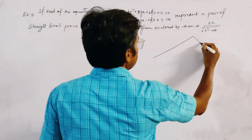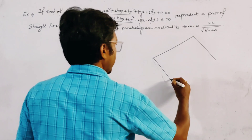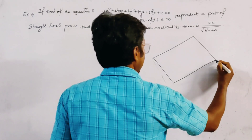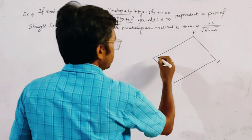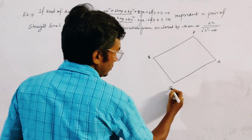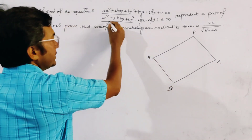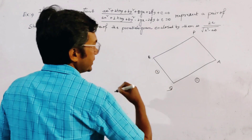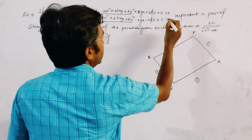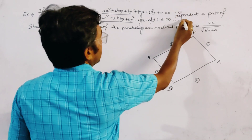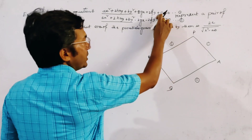Let the vertices of the parallelogram be P, A, B, and Q. Here Q, A and Q, B are represented by the second line — let it be line 2. And P, A and P, B are represented by the first line — let it be line 1.